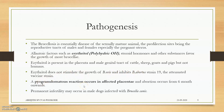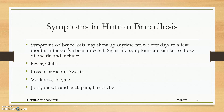A pyrogranulomatous reaction occurs in the affected placenta — there will be pus and granuloma-like lesions in the placenta. Necrotic placentitis will be present. Abortion occurs from 6 months onwards, mainly in the last trimester. Whenever dogs are affected with Brucella canis, it leads to permanent infertility.